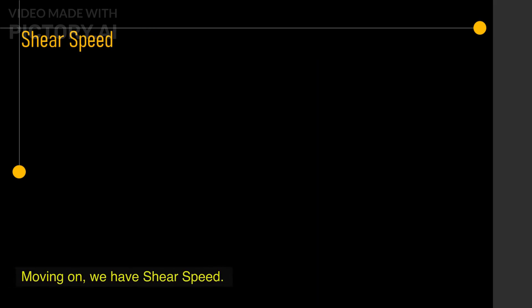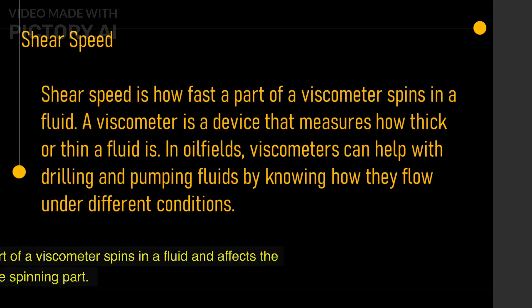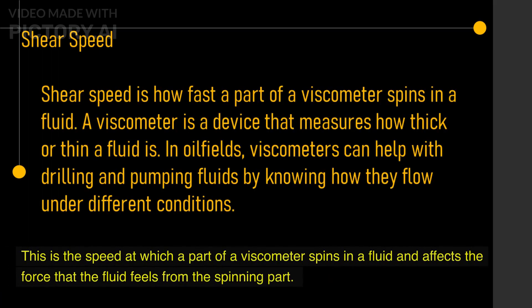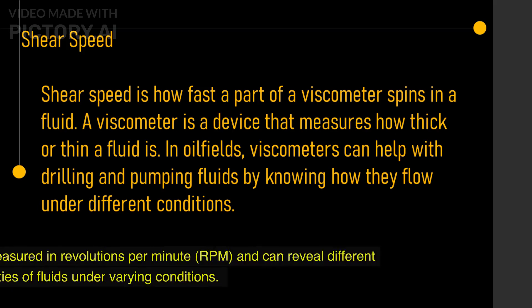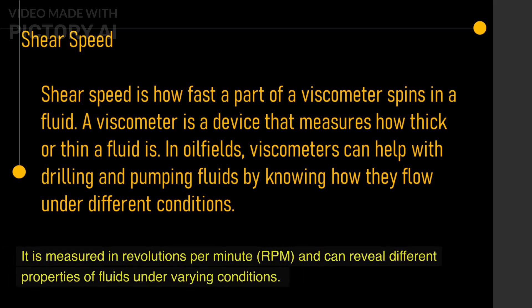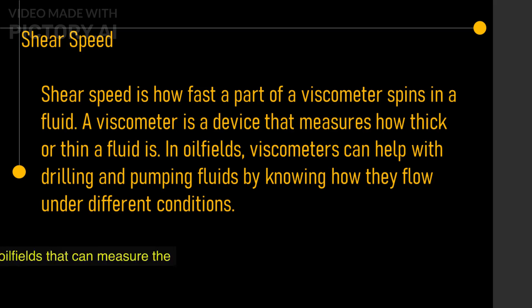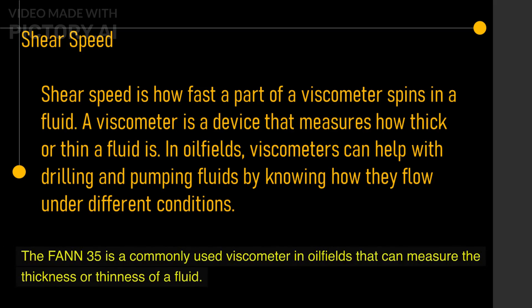Moving on, we have shear speed. This is the speed at which a part of a viscometer spins in a fluid and affects the force that the fluid feels from the spinning part. It is measured in revolutions per minute (RPM), and can reveal different properties of fluids under varying conditions. The Fann 35 is a commonly used viscometer in oil fields that can measure the thickness or thinness of a fluid.